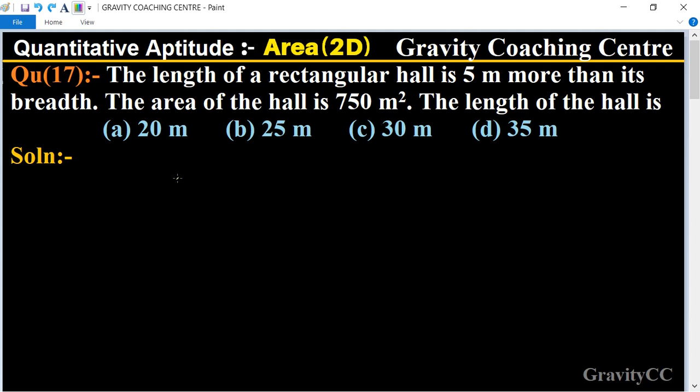The length of the rectangular hall is 5 meters more than its breadth. So first, let the breadth be x, then the length is x plus 5. According to